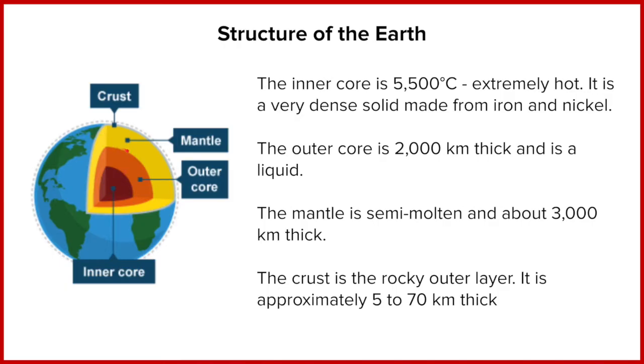Joining onto that is the mantle. This is our thickest layer, over 3,000 kilometers thick. It's made up of molten rock, so that is rock that's so hot it's turned to liquid. We call this magma. It's our thickest layer and it also provides a key process that we're going to come onto on the next slide.